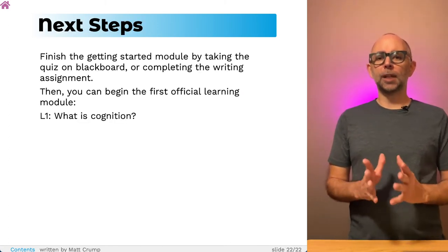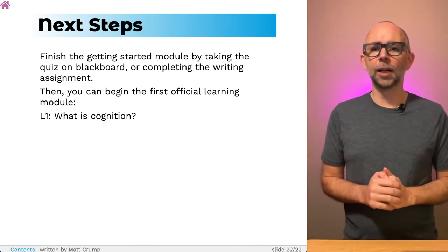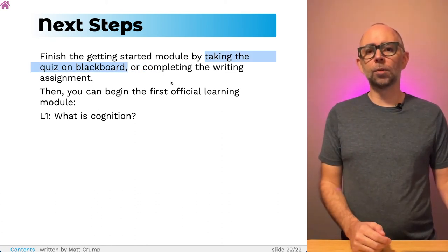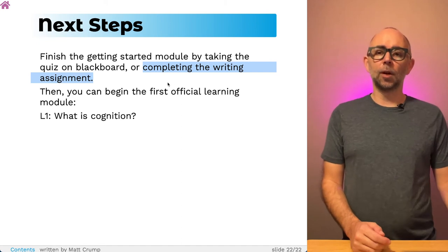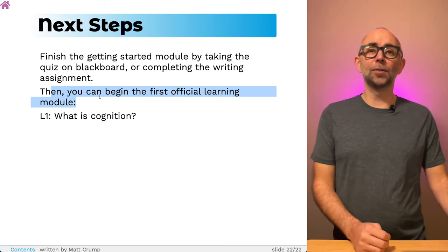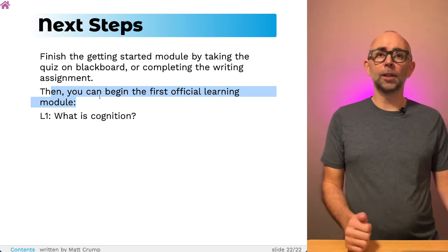Alright, so let's talk about some next steps. If you're working on the Getting Started module right now, you could move on and take the quiz for this module on Blackboard. Or you could complete the writing assignment also on Blackboard. Once you're done with that, you can move on to the first official learning module. Learning module one, what is cognition?